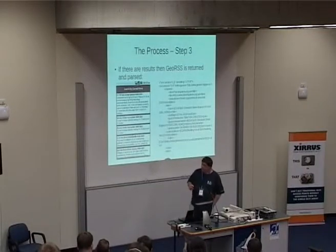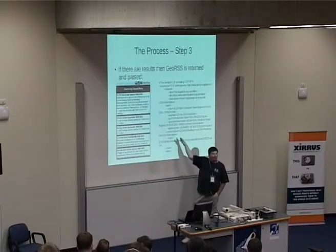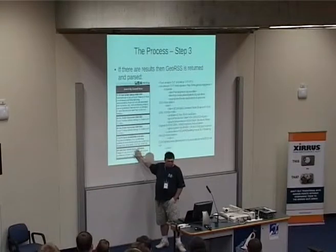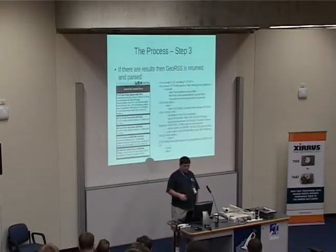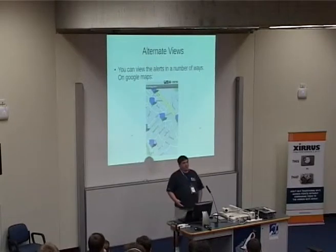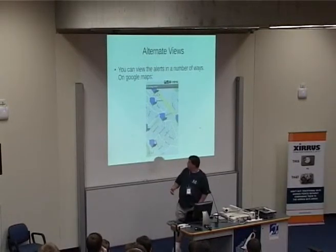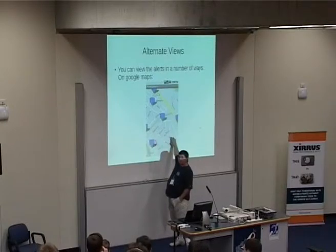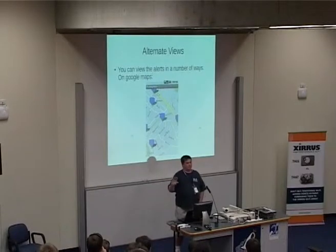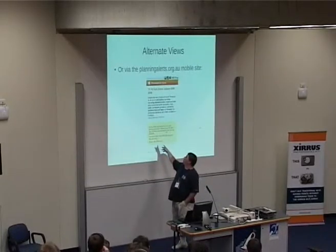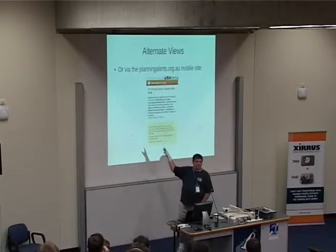If there are results, this is what you get back — a whole bunch of GeoRSS, plain GeoRSS with everything included. And this is how it's presented: people can have a list of all the Planning Alerts sorted by date, so the latest one's at the top. There are a couple of different ways of viewing the alerts — I've managed to tag them for Google Maps. Every time you touch one of the pins it brings up a little box showing the development application happening there. Or you can go to the mobile site for Planning Alerts, which gives you a bit more detail than what comes down on the GeoRSS.